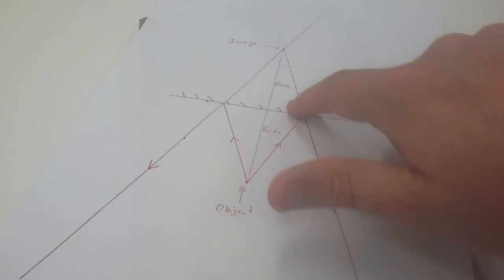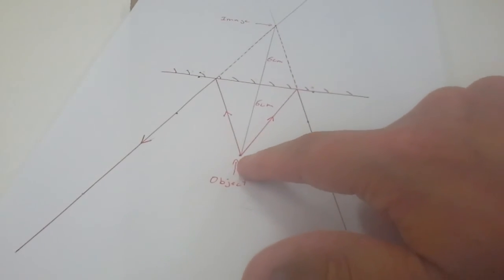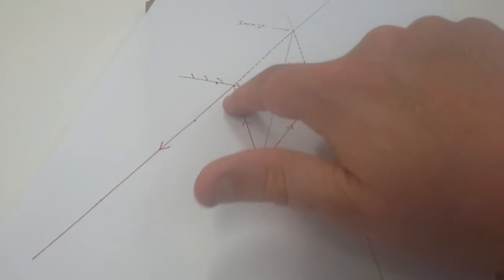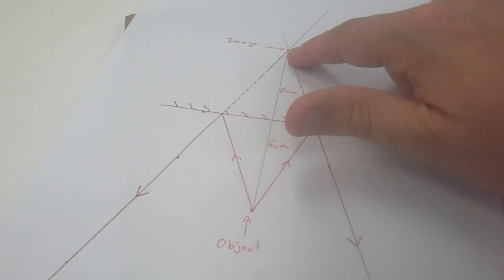So it appears like the light came from this direction and it appears like the light came from this direction, although really what's happened is they've come off the object and rebounded like this.